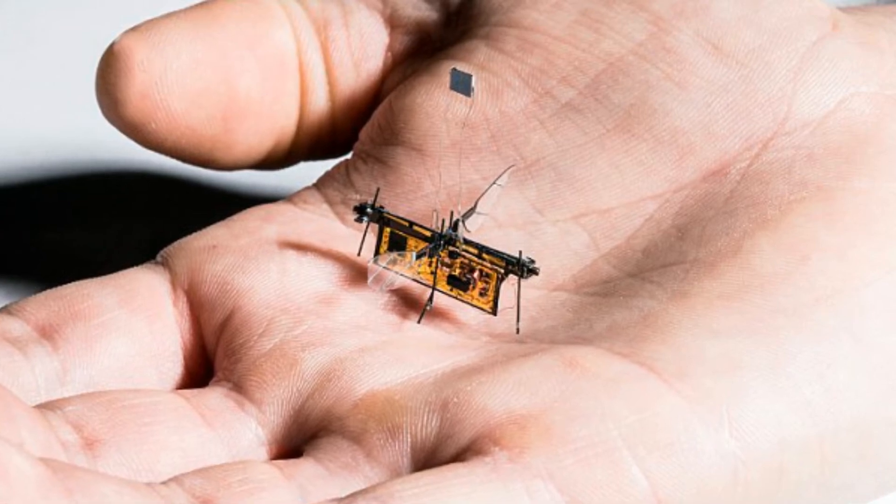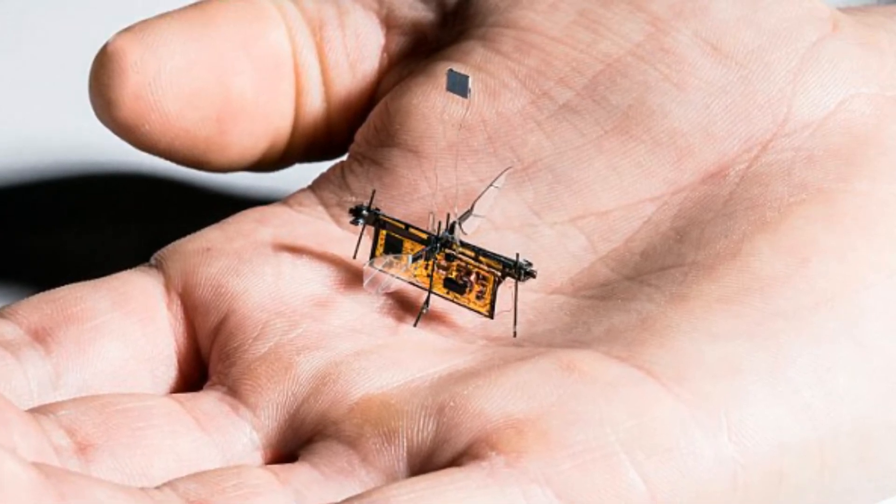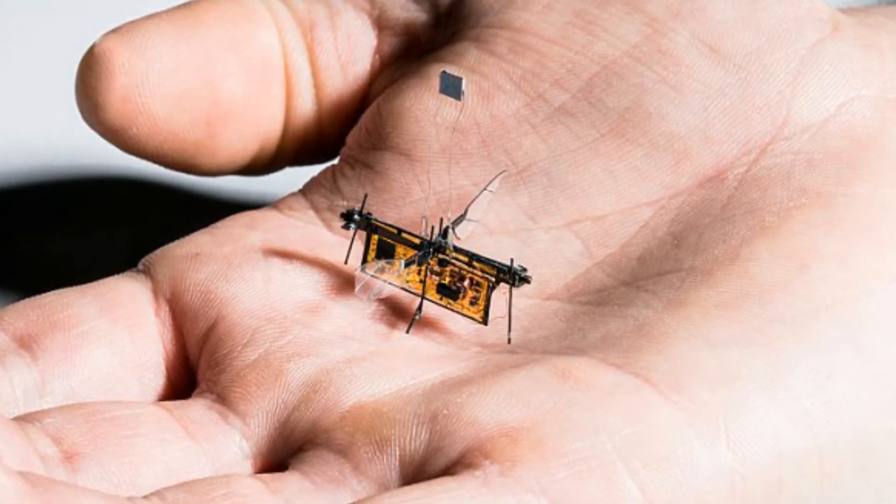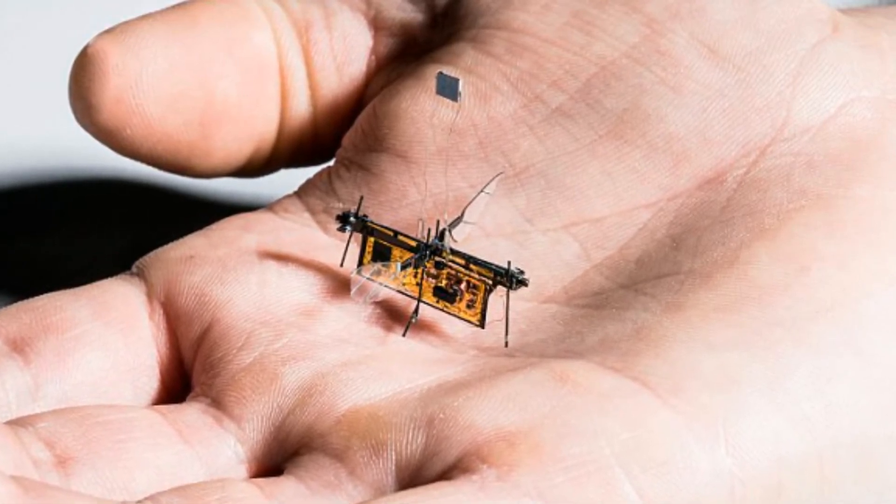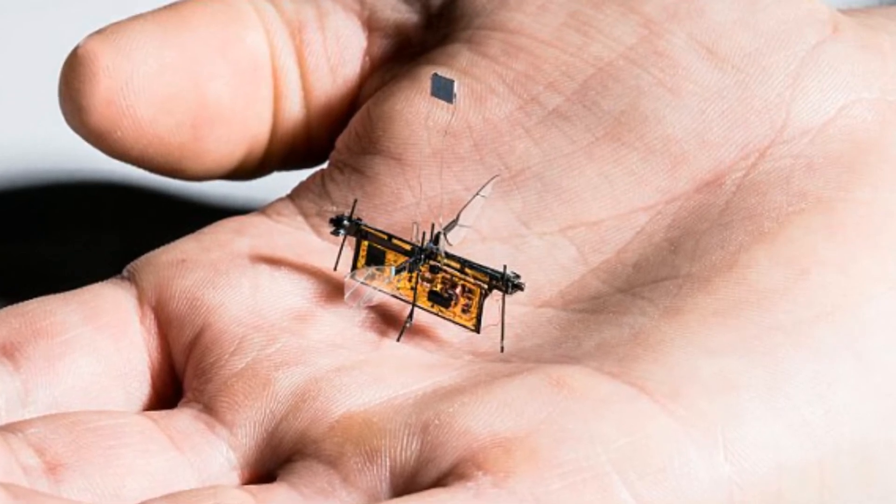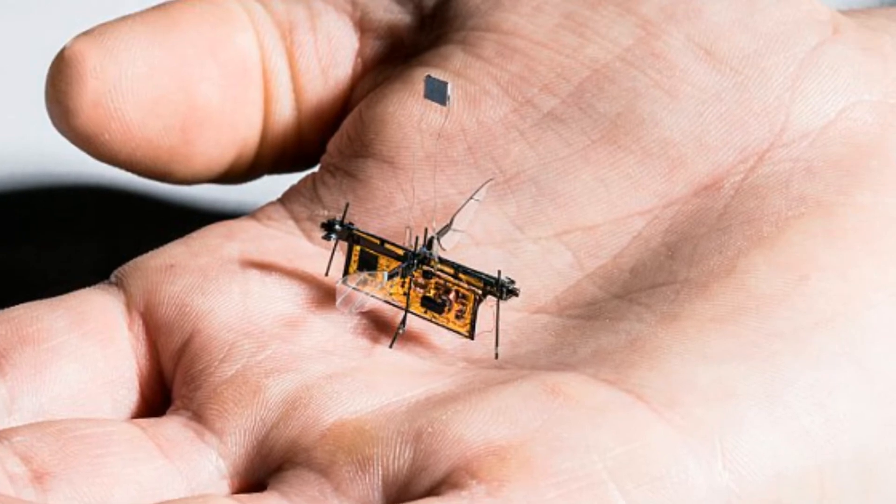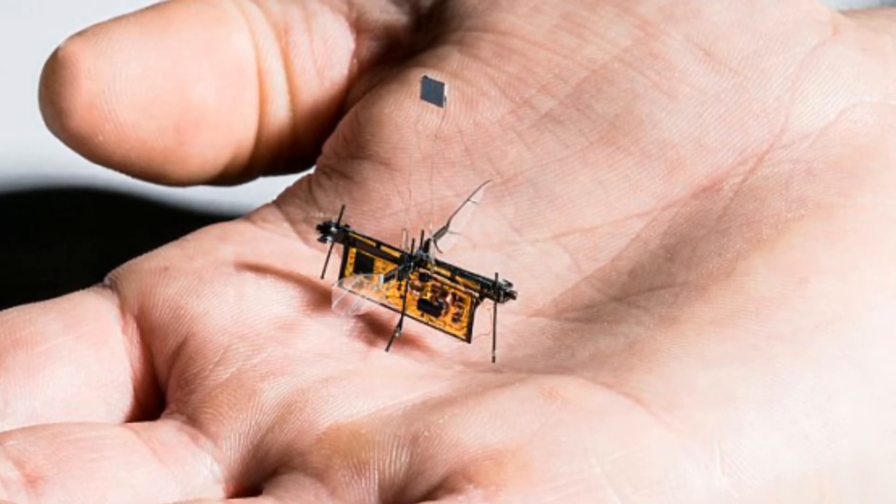Though insect-sized flying robots have been around for a while, none had been able to take untethered flight until now. Engineers at the University of Washington have revealed that the RoboFly has taken its first untethered flaps, marking the first time a wireless flying robotic insect has flown.